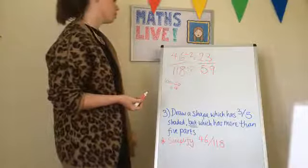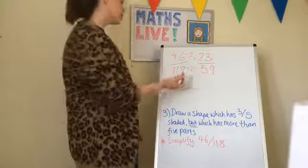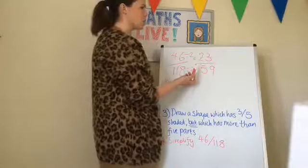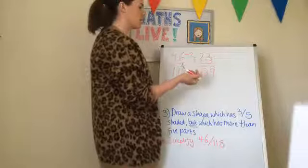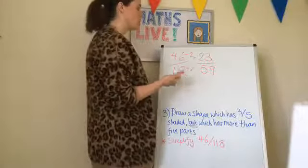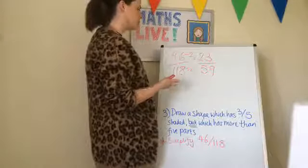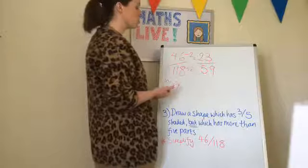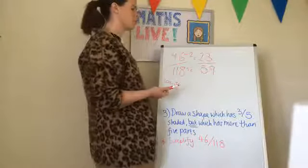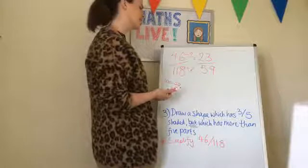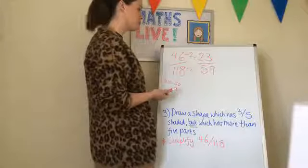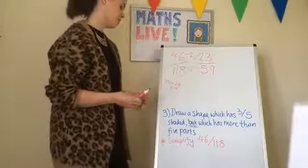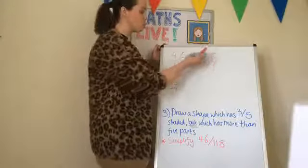I can't divide by 2 because they're both odd numbers. I need to think about multiples that go into 23. Three times table: 3, 6, 9, 12, 15, 18, 21, 24 — no. Can't be fives. Six times table — no. Sevens: 7, 14, 21, 28 — no. Eights — no. Nines — no. So actually, this fraction is the simplest form of 46 over 118, because there are no factors to make it any smaller.